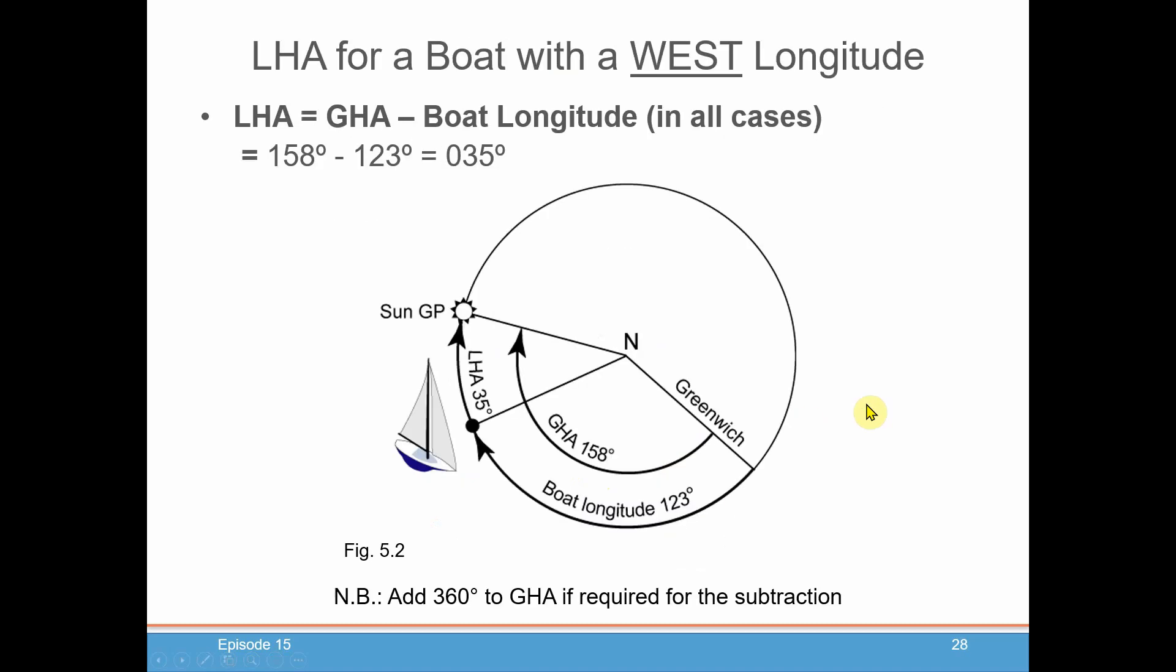Now for a boat with a west longitude, so you're west of Greenwich, your LHA will be the GHA of your celestial body, which in this case will be the sun. In this case, it's 158 degrees. And you would subtract the boat longitude, again, if our longitude is west, to get the LHA, the distance from the boat's meridian to the sun.